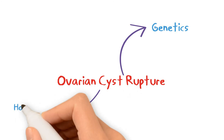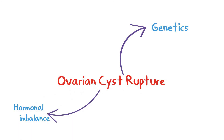The second is hormonal imbalance. If your hormones are all over the place, you are likely to have cysts that grow too large, or ones whose walls are so fragile that the slightest build-up of cystic fluid causes them to rupture.